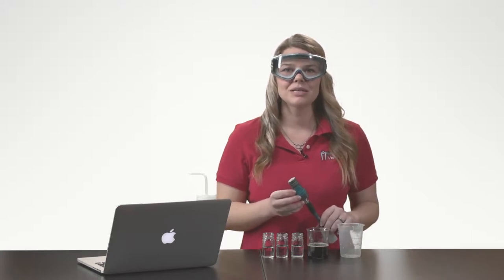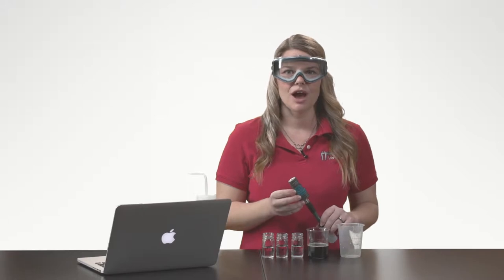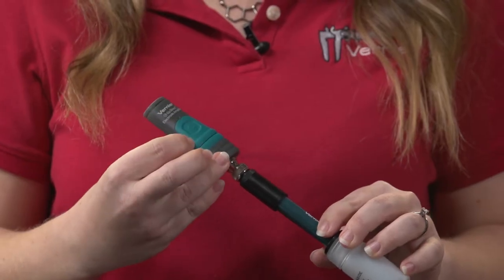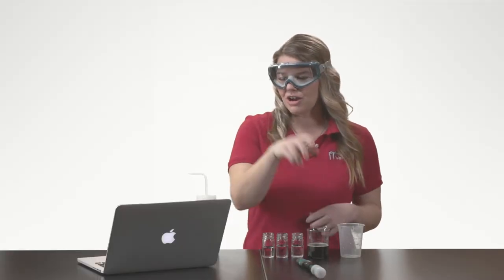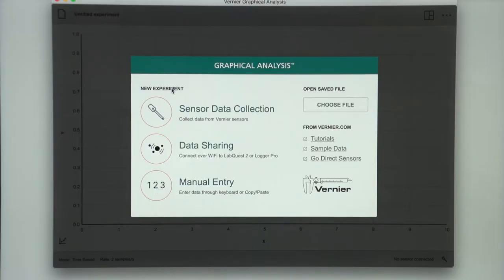Since I will be taking data via Bluetooth, I will first turn on my pH sensor. Then I will launch the Graphical Analysis 4 app and select Sensor Data Collection.